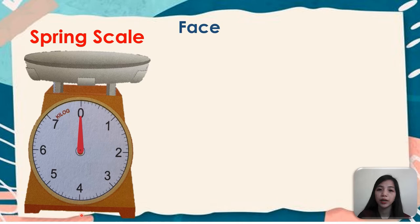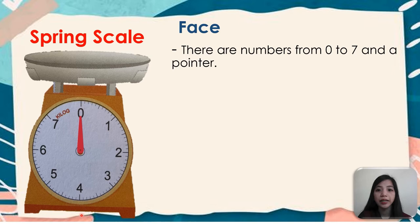The first one is face. So let's describe what is face. There are numbers from zero to seven and a pointer. So we have the pointer here and then the numbers: zero, one, two, three, four, five, six, and seven. So each unit represents one kilogram.